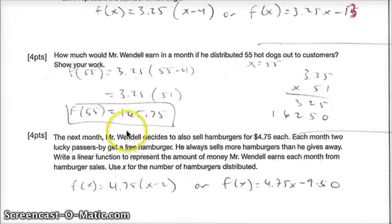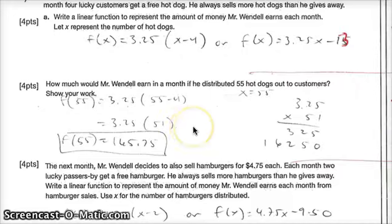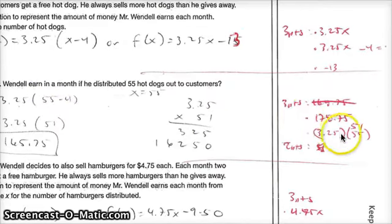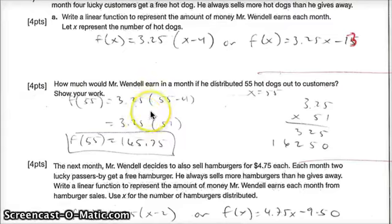Question number 4b. How much would Mr. Wendell earn in a month if he distributed 55 hot dogs out to customers? Well, if he passes out 55 hot dogs, you have to subtract the 4 that he gave away. So really, you're only making profit on 51 of those. So 51 times 3.25 would have gotten you $165.75. If you were multiplying 55 times 3.25, I gave you guys 3 points because you forgot to subtract the 4 hot dogs that he's giving away for free.